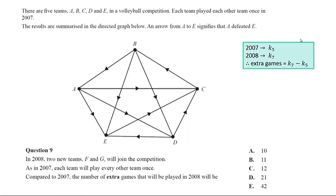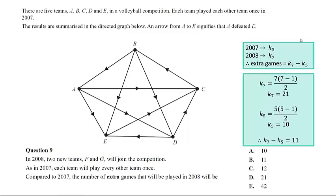So we need to work out the number of edges because each edge represents a match for a complete graph of seven vertices, the number of edges in a complete graph of five vertices, and find the difference. So our complete graph of seven will have 21 edges or 21 matches played. A complete graph of five teams will have 10 matches played, so the difference there is 11.